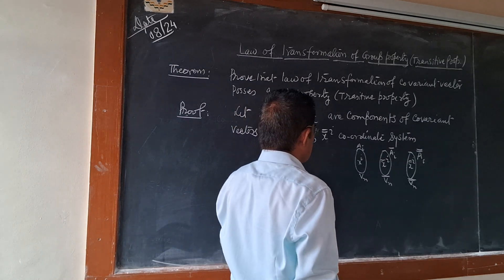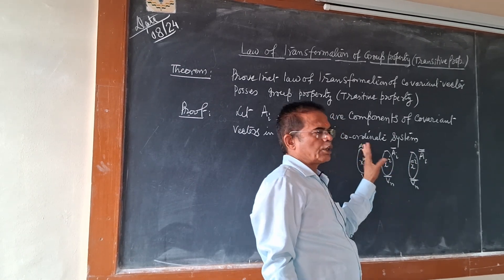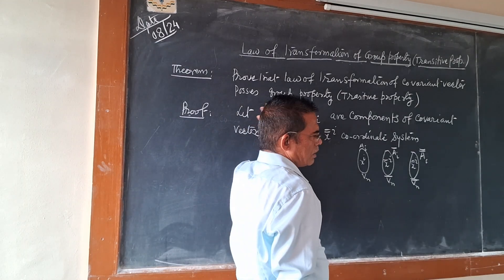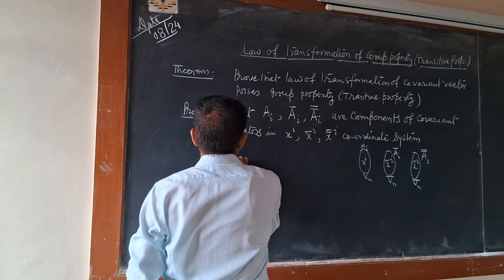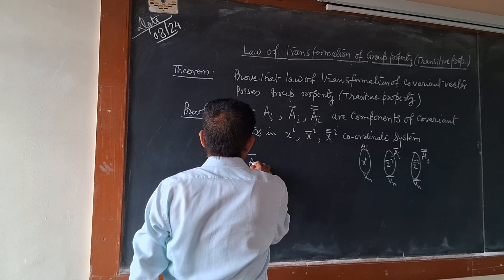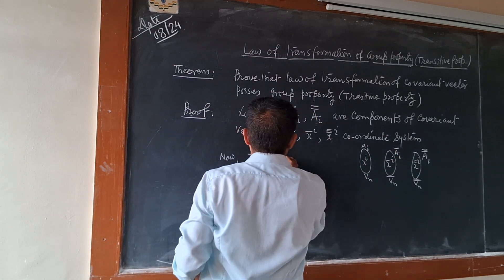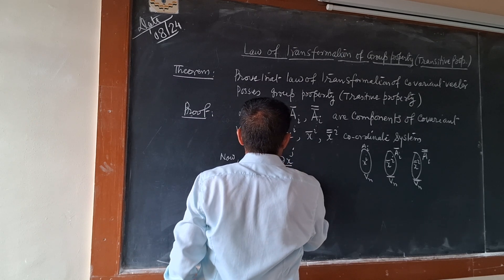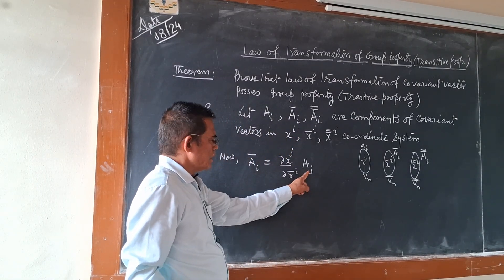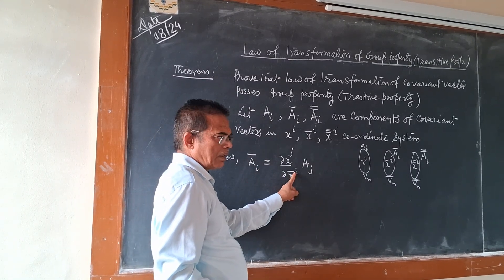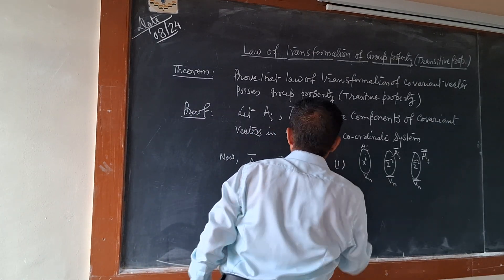तो अपने को यह proof करना है कि इसका relation पहले इससे हो, फिर इसका relation इससे हो, फिर हम direct इसका इससे दिखा देंगे, and it is proved. These are three covariant vectors in three different coordinate systems. Now, transformation rule लिखेंगे — non-bar से bar: Ā_i = (∂x^j / ∂x̄^i) · A_j. ध्यान देना है, यहाँ पर दोनों ही index नीचे हैं. j dummy है, j के स्थान में आप कोई भी index ले सकते हैं. इसको मान लिया हमने — equation one.